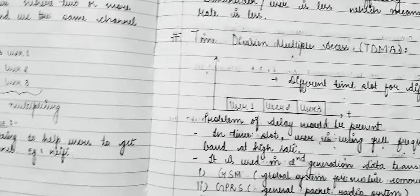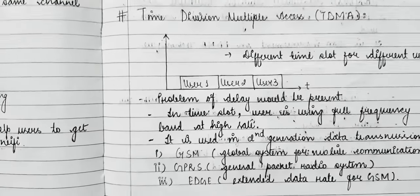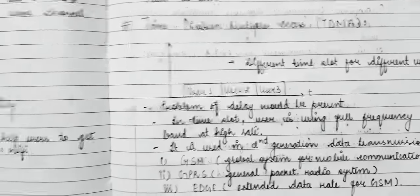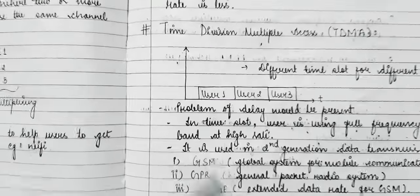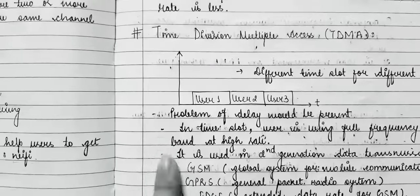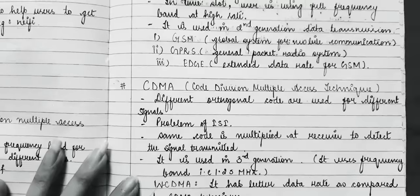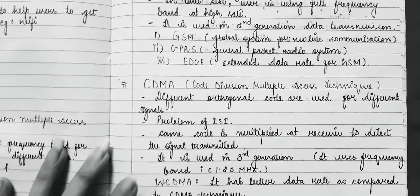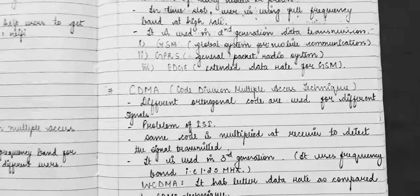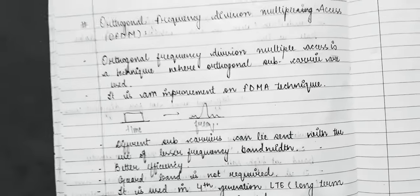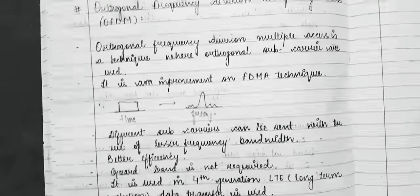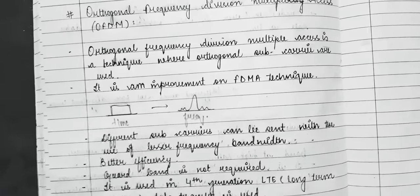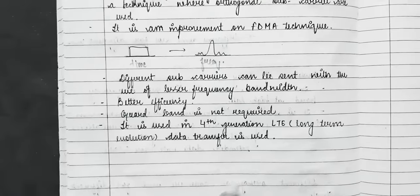To overcome FDMA, we moved to TDMA, where different time slots are allotted to different users — but there is a problem of delay, and the full frequency band is used in each time slot. To overcome TDMA's drawbacks, CDMA was introduced, where different orthogonal codes are used for different signals, the same code is multiplied at the receiver, and it is a 3rd generation technique. Finally, OFDM uses orthogonal subcarriers and is an improvement of FDMA used in 4th generation. In the next lecture we will discuss CDMA and FDMA in detail. Thank you.